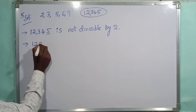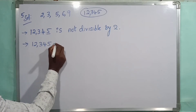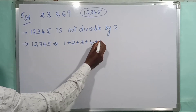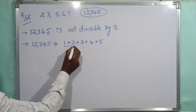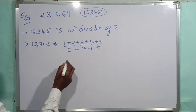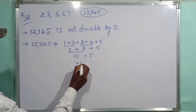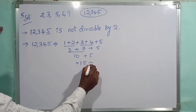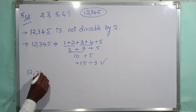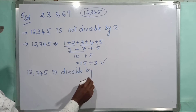Now we are moving to 3. For 12345, the divisibility rule for 3 is that the sum of the digits should be divisible by 3. The sum is 1+2+3+4+5 = 15. Is 15 divisible by 3? Yes, 3×5=15. So we can conclude that 12345 is divisible by 3.